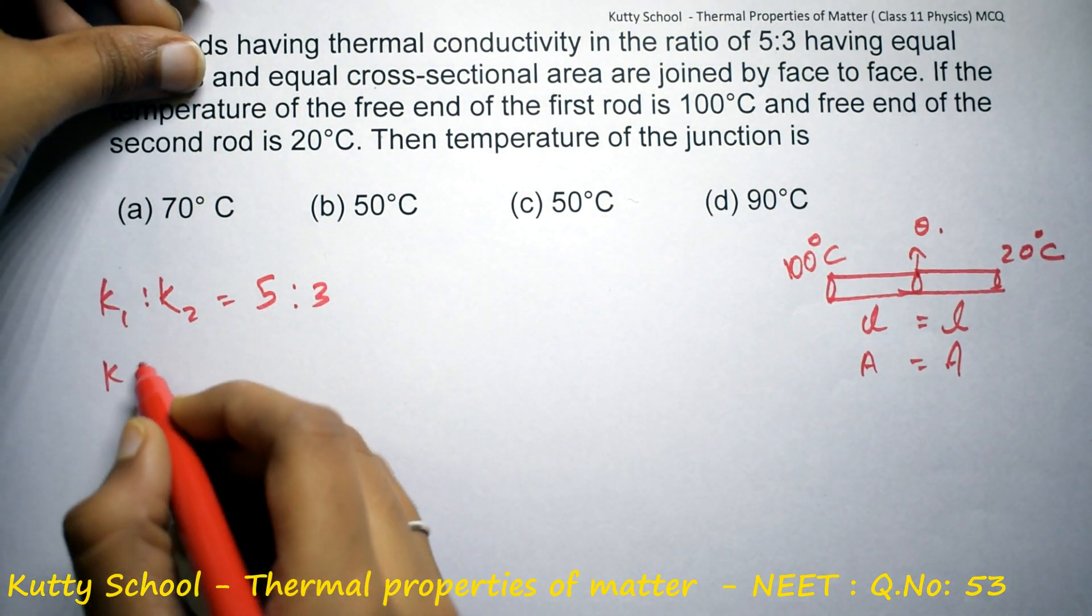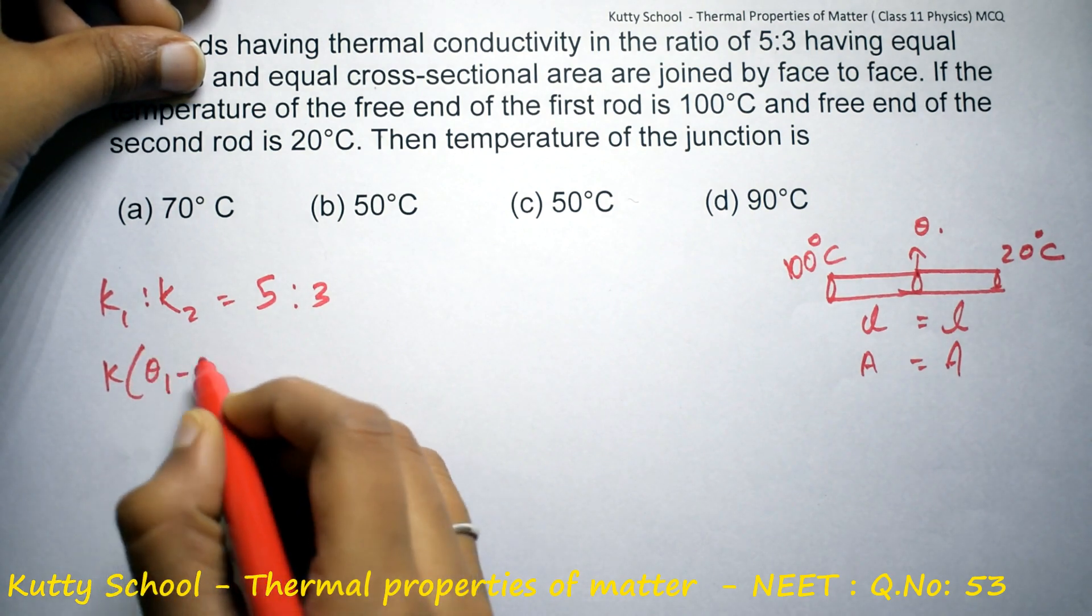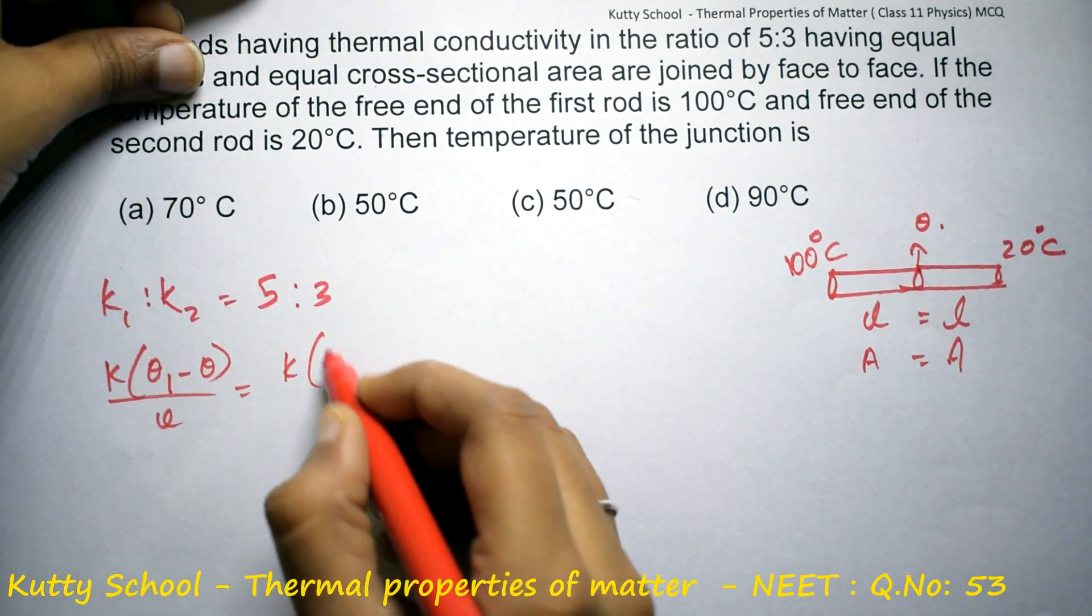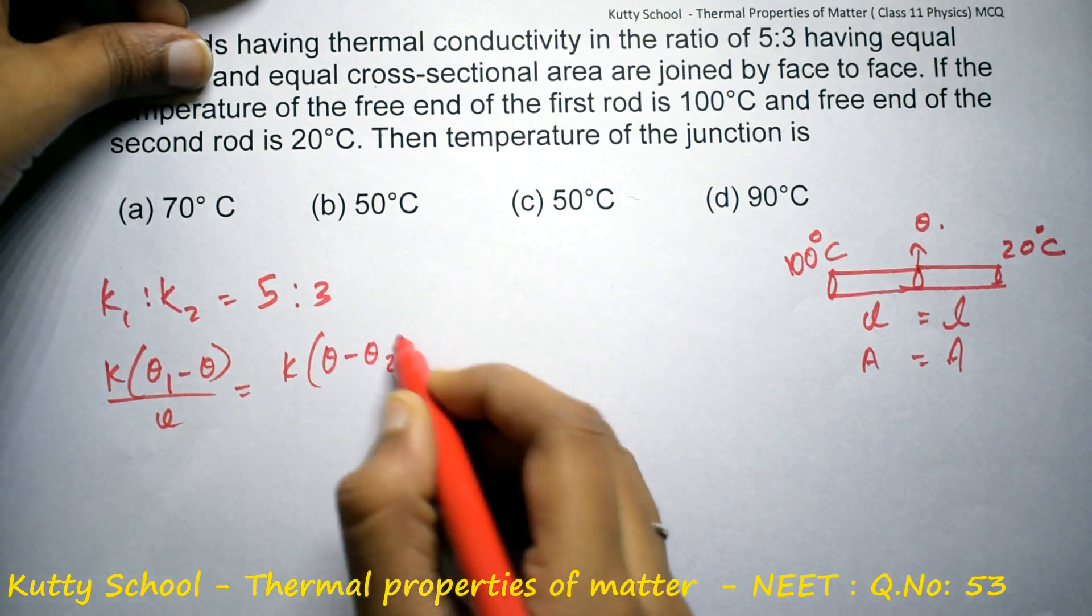The formula is k times theta 1 minus theta divided by L equals k times theta minus theta 2 divided by L.